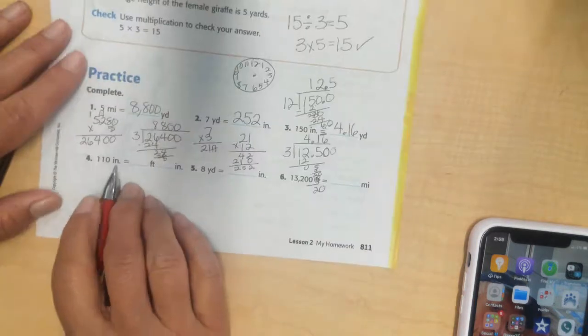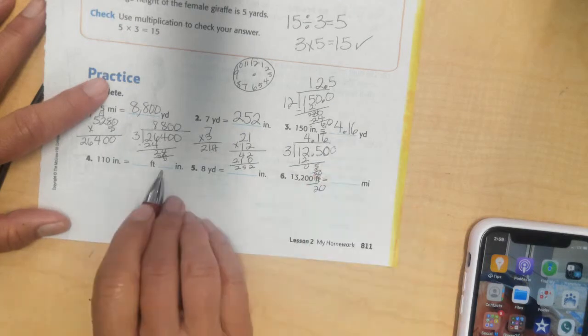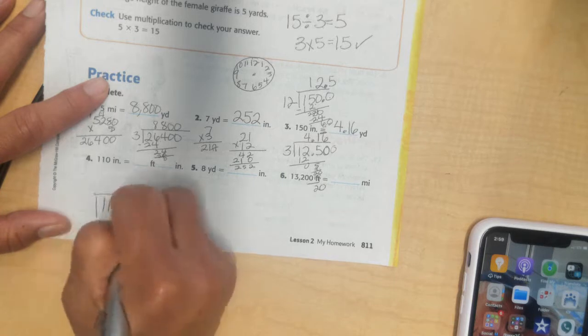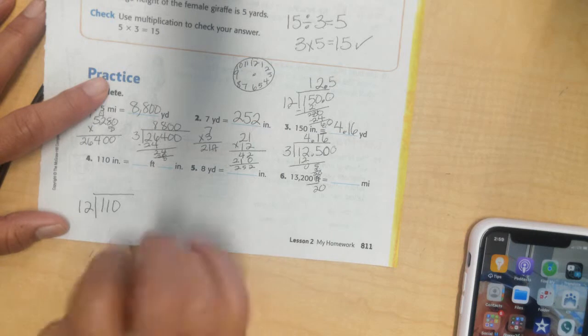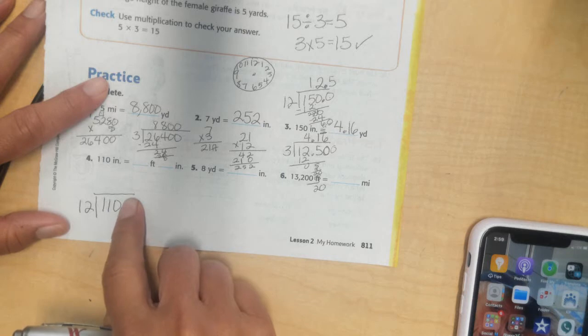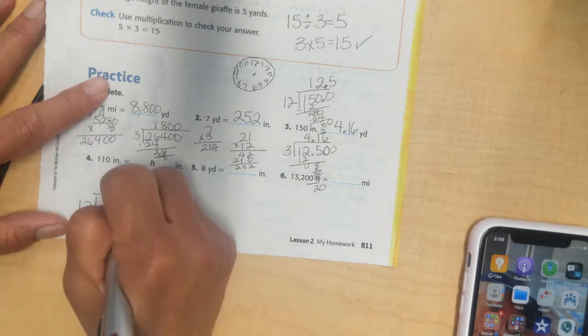Right down here, I'm dividing it up into feet and inches. So, I don't need my points. I'm going to need a remainder. 110 inches. I'm going to divide it up by 12 because there's 12 inches in 1 foot. Will 12 go into 1? No. Will 12 go into 11? No. Will 12 go into 120? Yes. I'm thinking of my 12 tables. I know 12 times 9 is 108. So, that's close enough. I'll have 9.